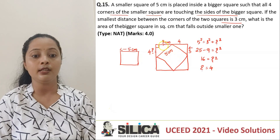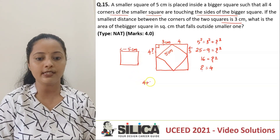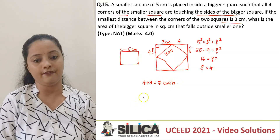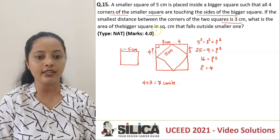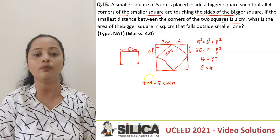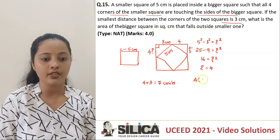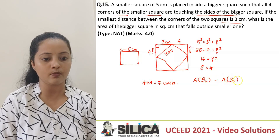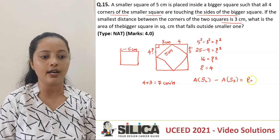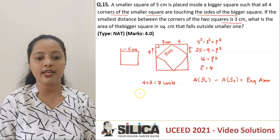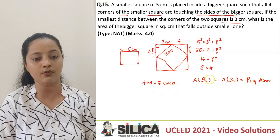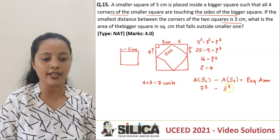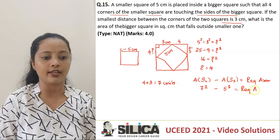So what is the total side of the outer square? I can take it to be 4 plus 3, which equals 7 units. The internal square has a side of 5 units, and we need to find the area of the bigger square that falls outside the smaller one. The area of the larger square minus the area of the smaller square gives us the required area. The larger square has a side of 7 cm, so the area is 7 squared minus 5 squared.